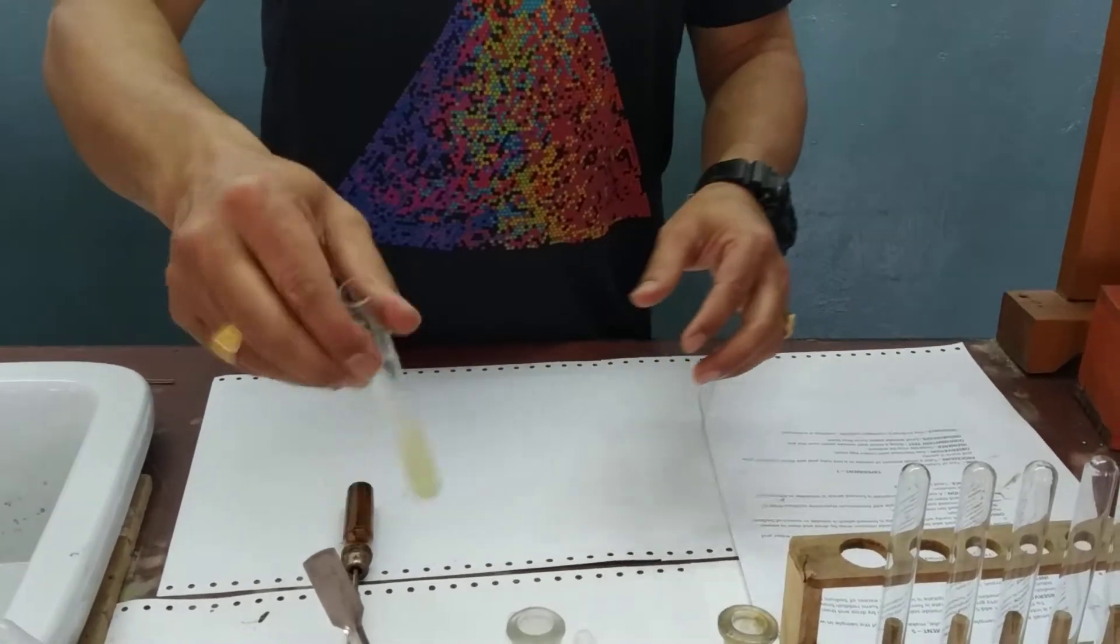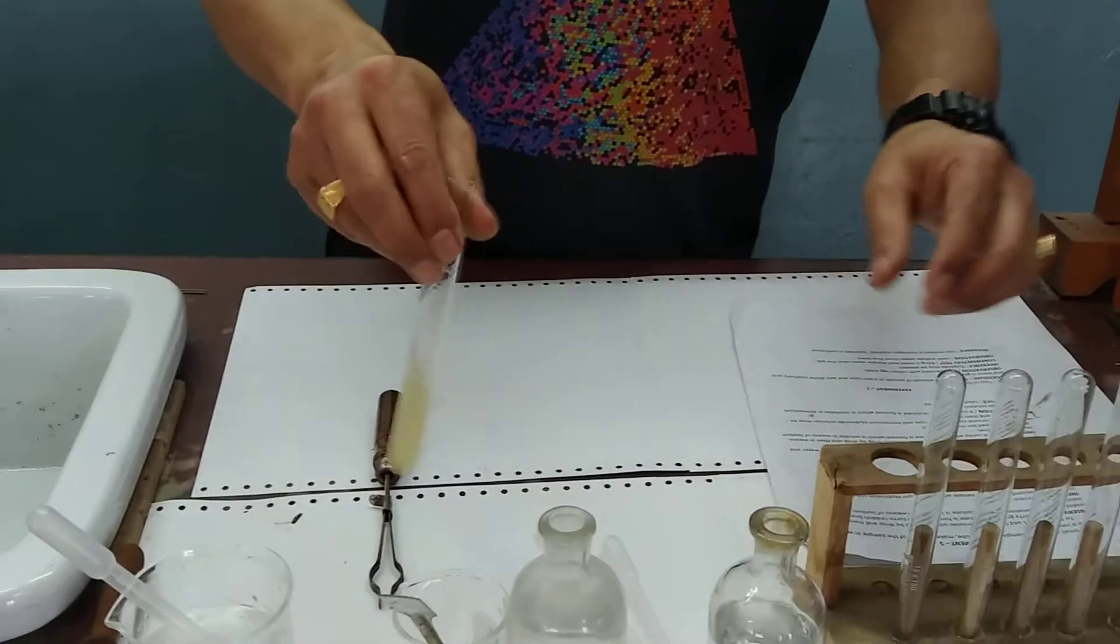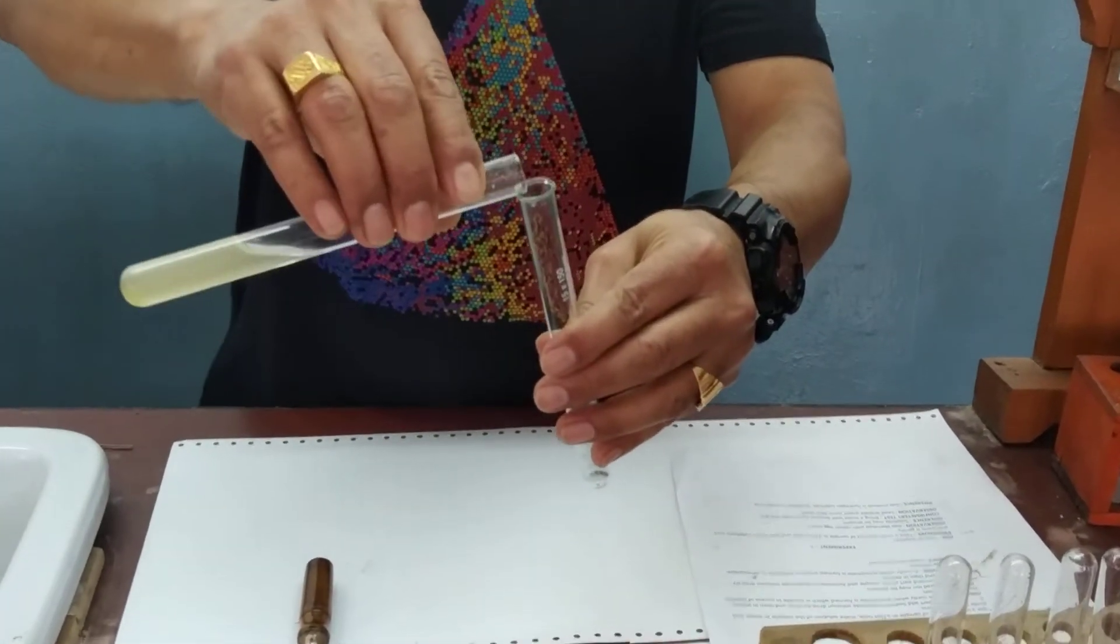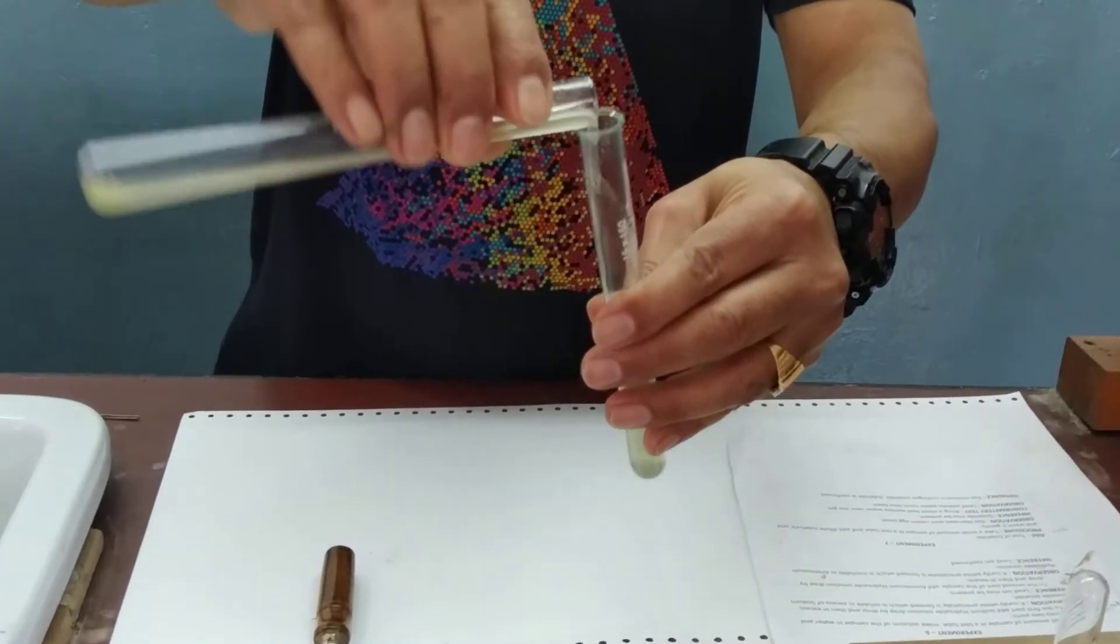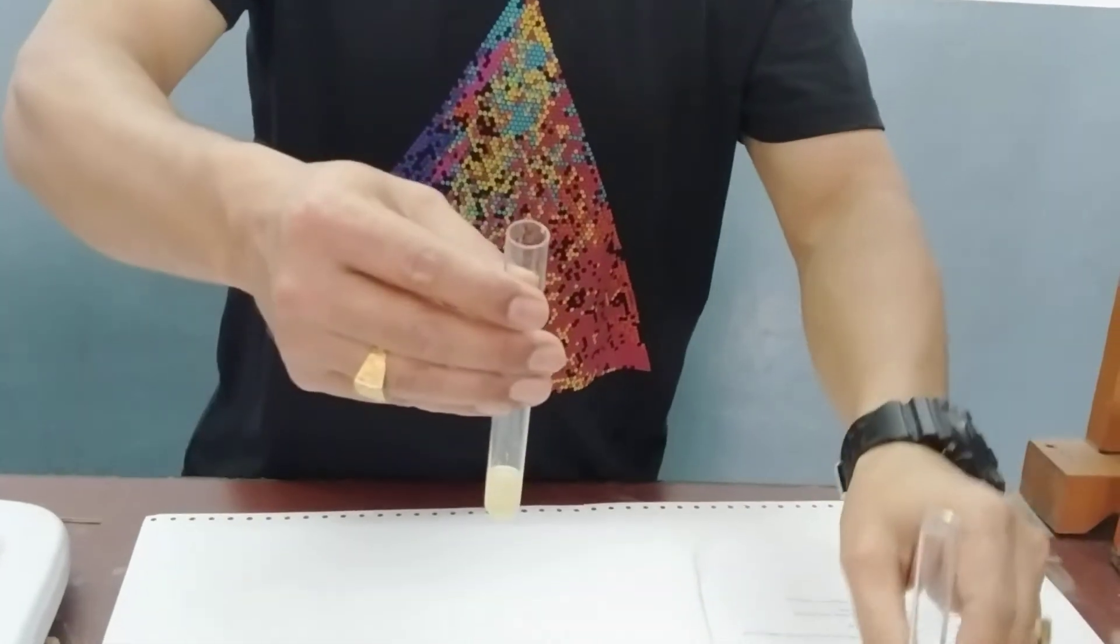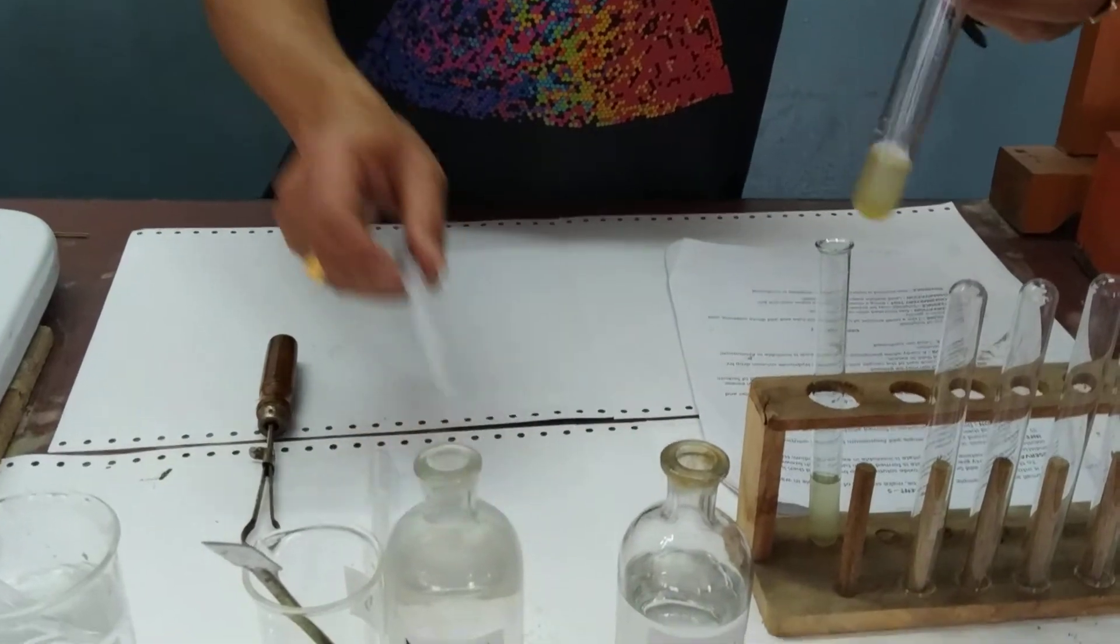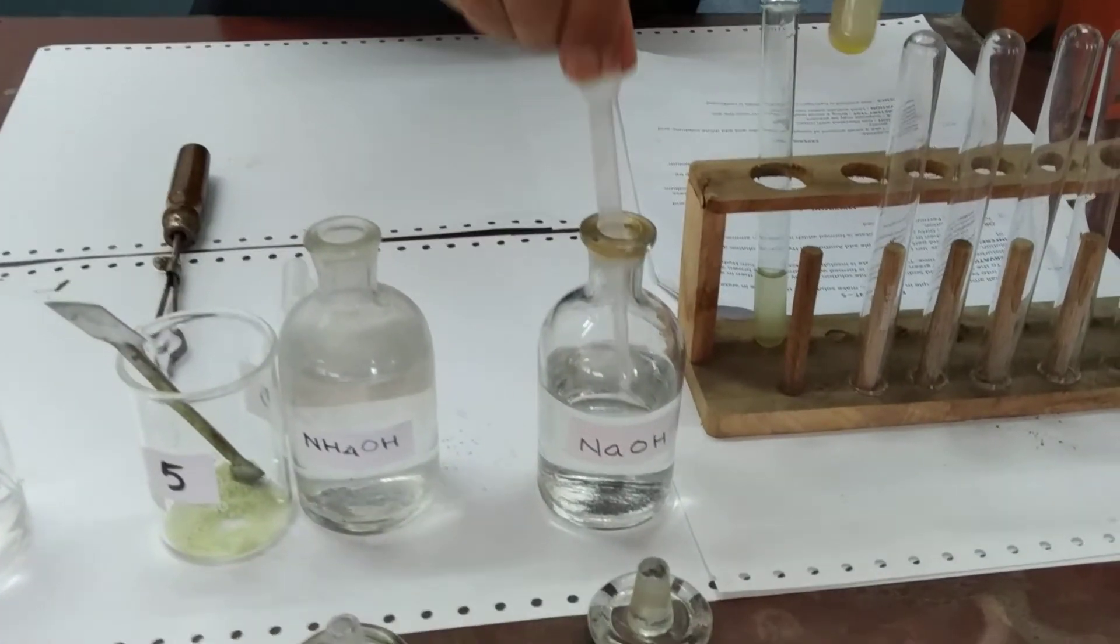We shake it slightly to make a solution, then divide the solution into two parts. To the first part of the sample, we add sodium hydroxide, first drop by drop and then in excess.